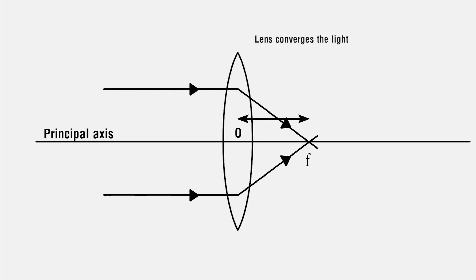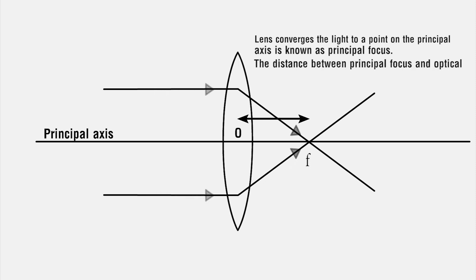The lens converges light to a point on the principal axis known as principal focus. The distance between principal focus and optical center is known as focal length.